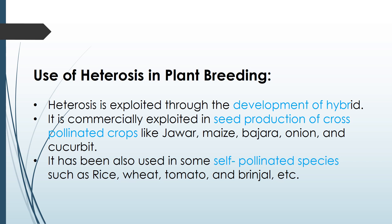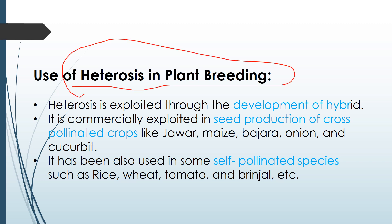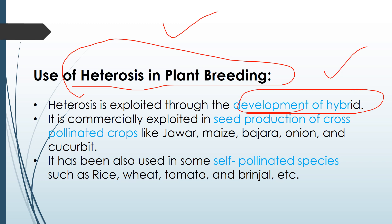The use of heterosis in plant breeding revolves around the development of superior hybrids. It is applied in seed production of cross-pollinated crops like jowar, maize, bajra, onion, and cucurbits, and also in self-pollinated species like rice, wheat, tomato, and brinjal. In exam answers, you can also include all the manifestation effects — disease resistance, pest resistance, climate resistance — as uses of heterosis.